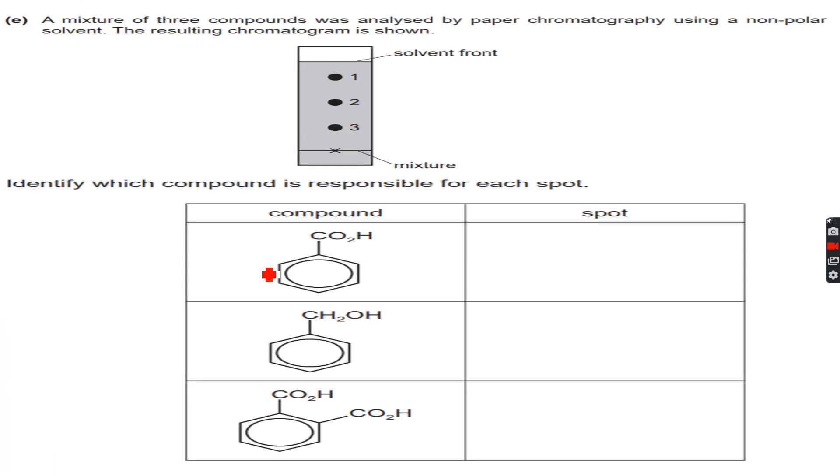Now let's move forward and do an exercise on chromatography. A mixture of three compounds was analyzed by paper chromatography using a non-polar solvent. The resulting chromatogram is shown. Very important thing to highlight first is that non-polar solvent - very important because this means the mobile phase is non-polar.